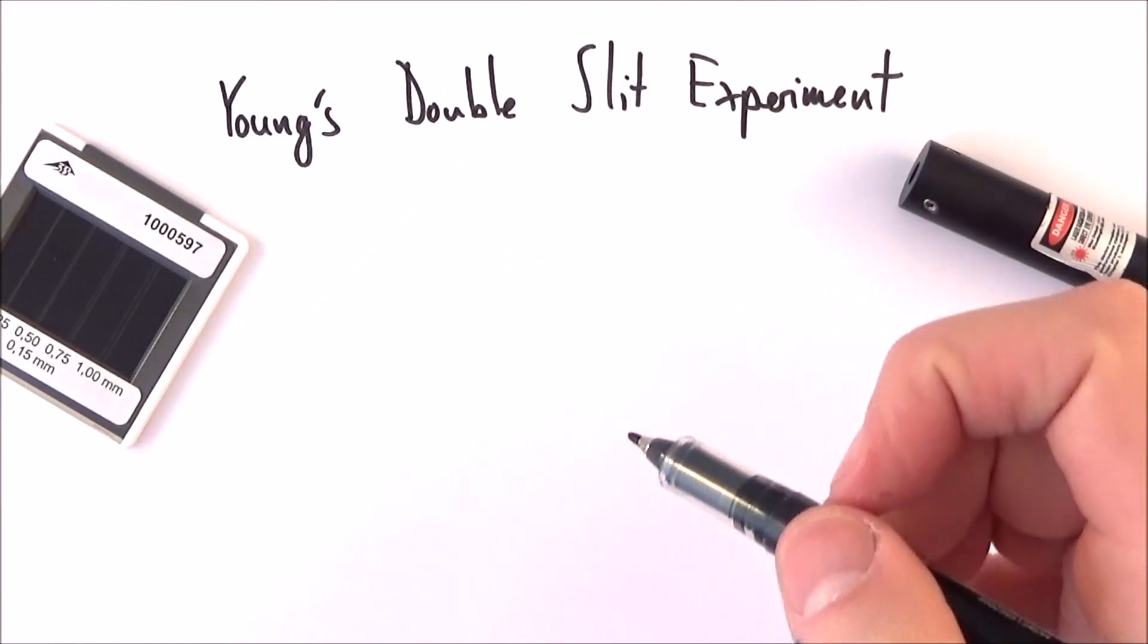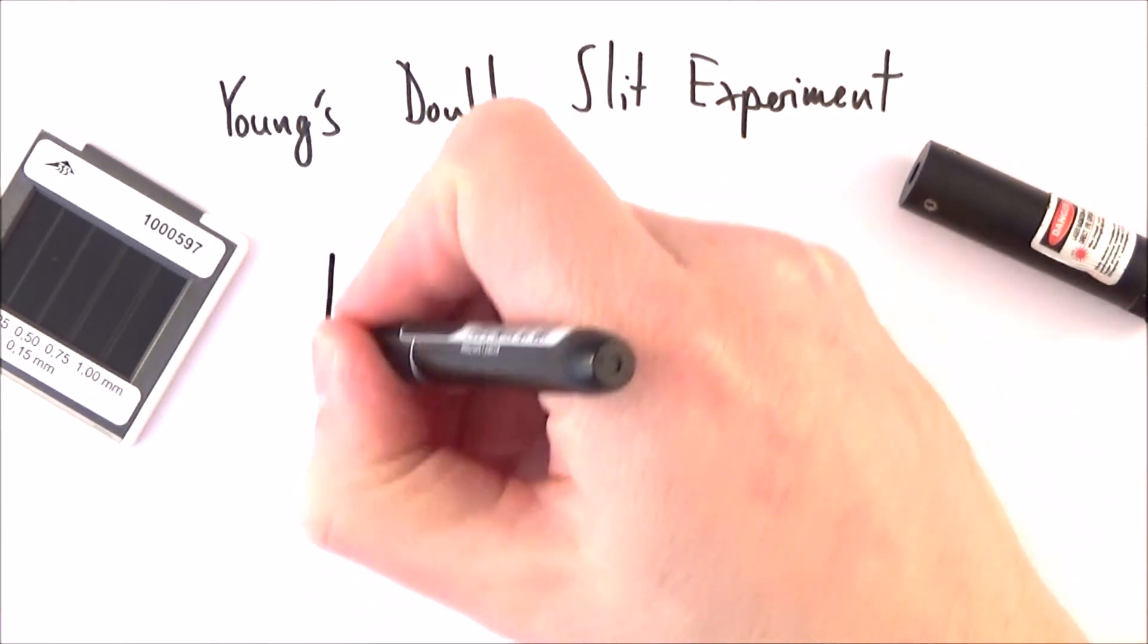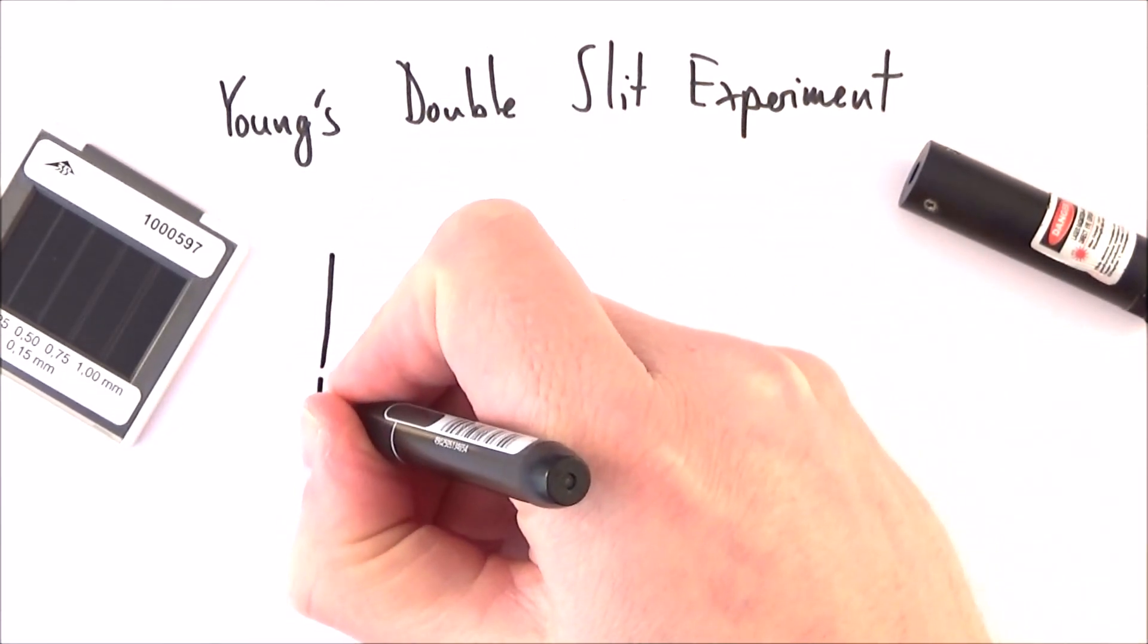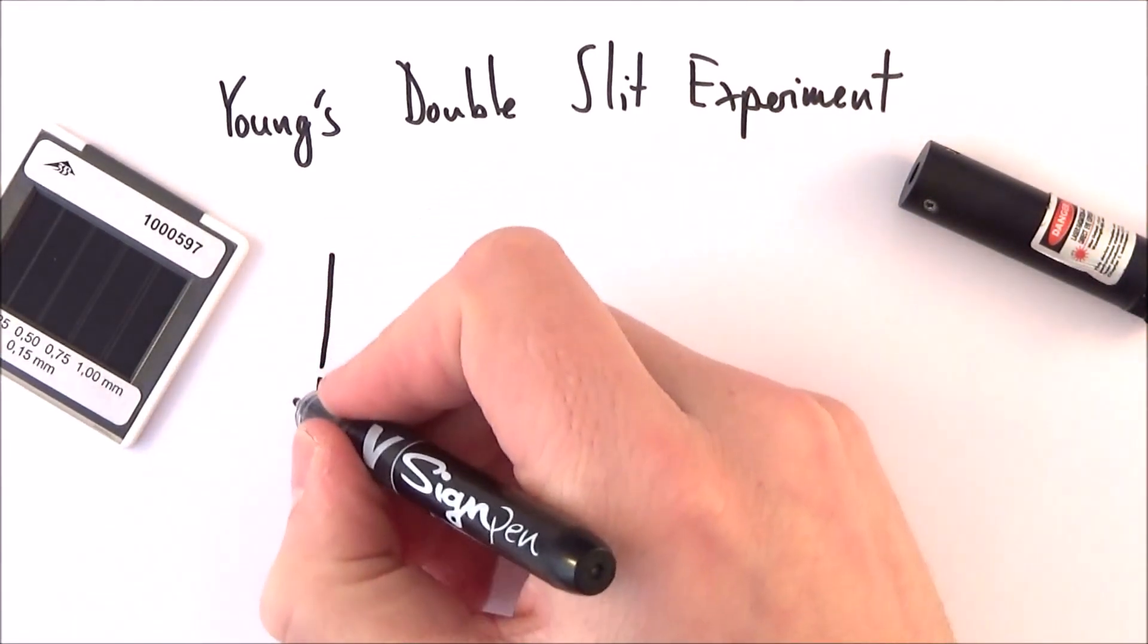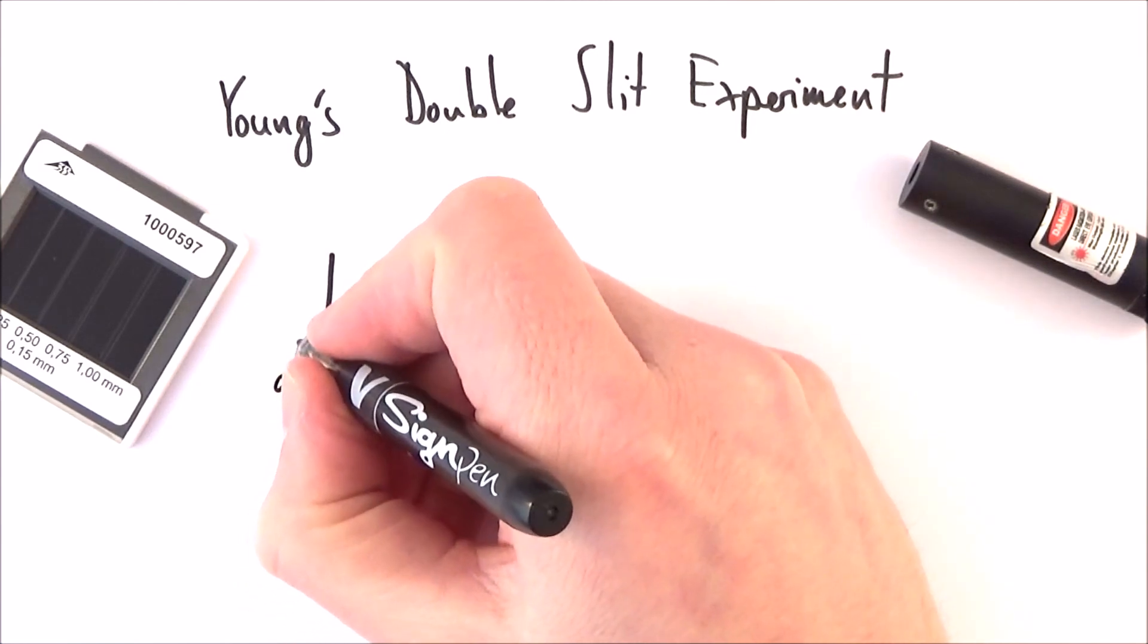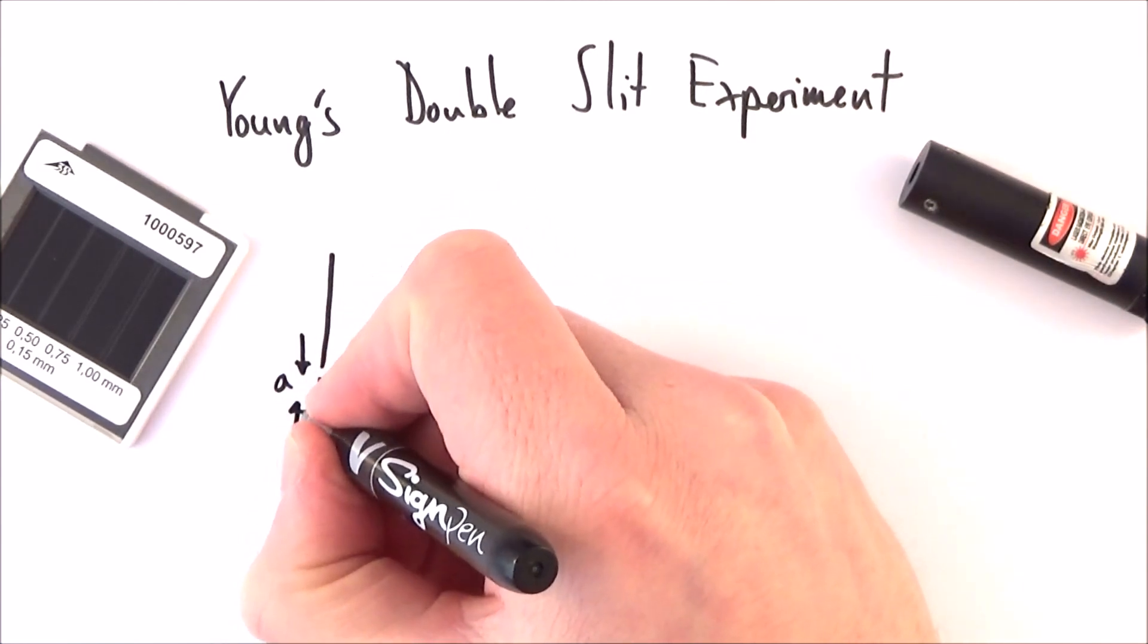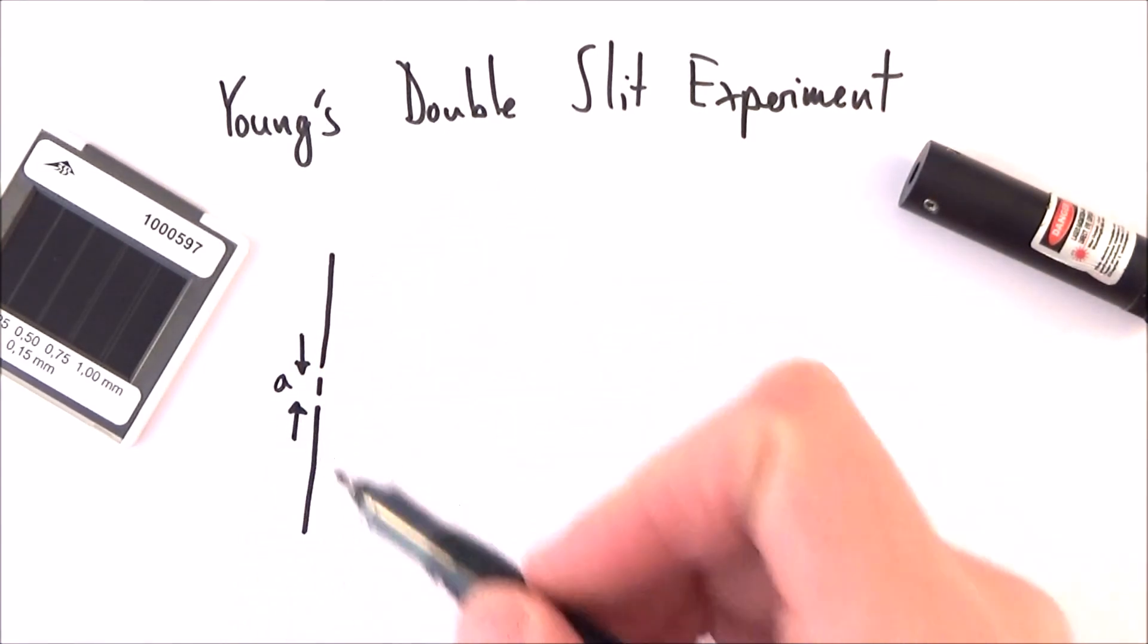The setup for Young's double slit experiment is fairly straightforward. What we have is something with a double slit in it, and we can look at the distance between the two slits as a distance that we call little a. So little a is the slit separation.